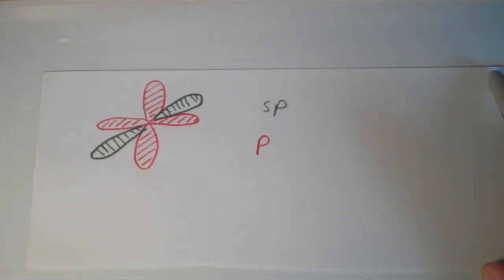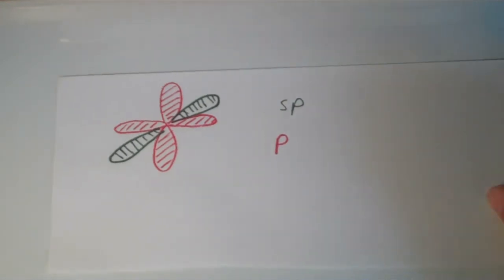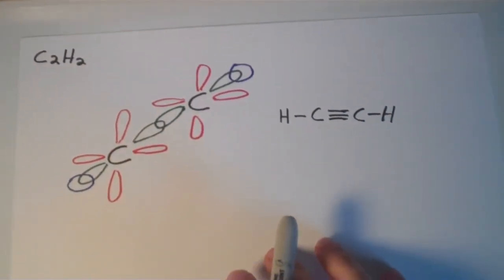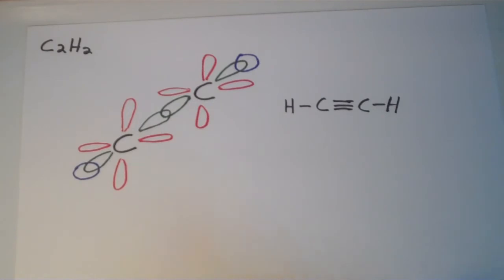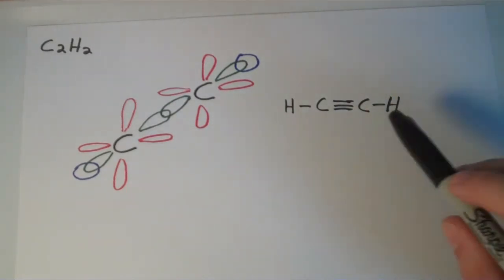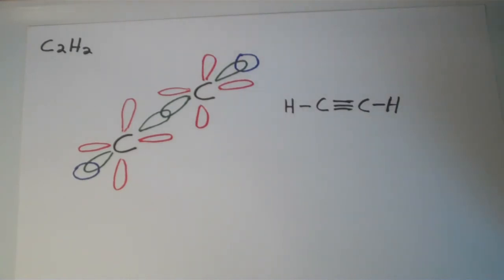That is basically what an sp hybridized atom looks like. Now let's look at a molecule in which atoms are sp hybridized. This is what we call acetylene, it's also called ethyne, and it consists of two carbons that are triply bonded to one another, so there's a triple covalent bond between the two carbons, and each of the carbons also has a hydrogen bonded to it.